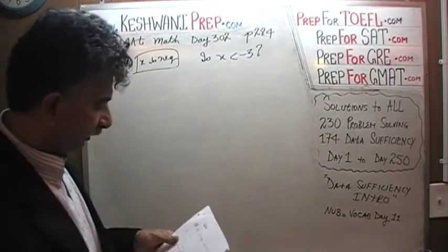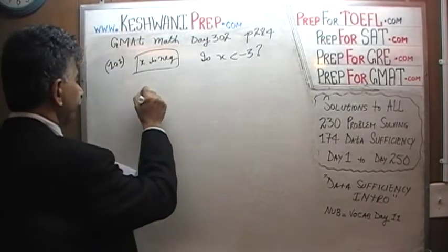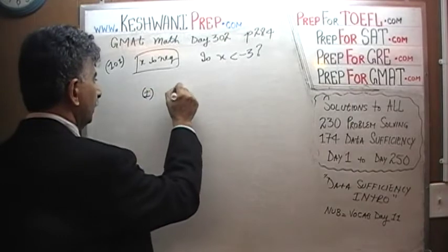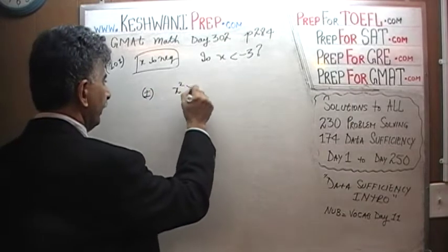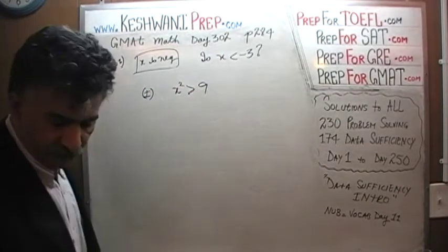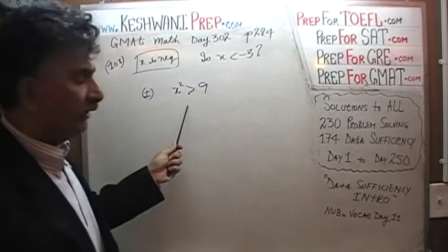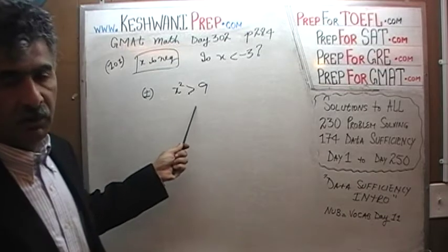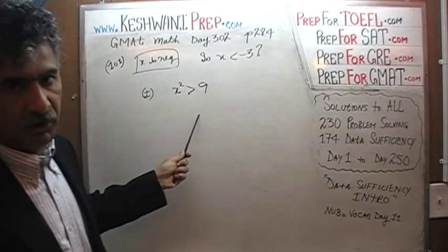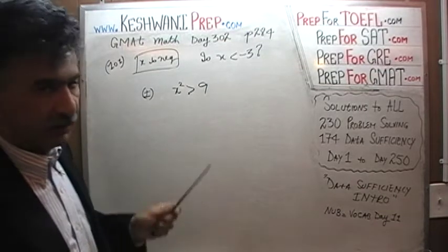Let's see what they tell us in the first statement. The first statement tells us that X squared is more than 9. What we have to ask ourselves is: where would we find this scenario to be true — where the square of X is more than 9?